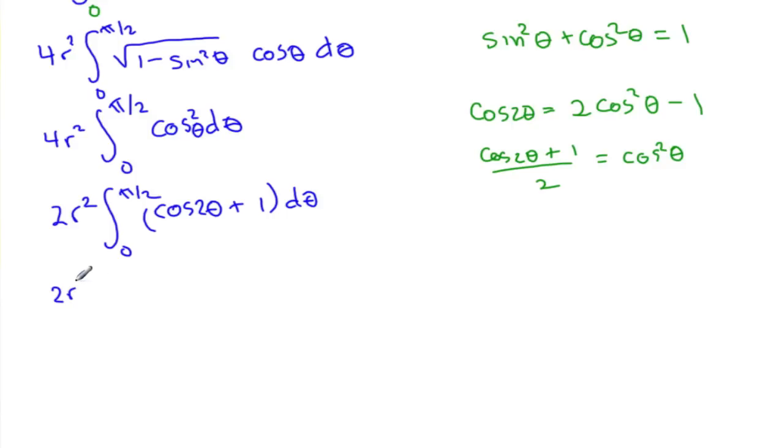Now, 2r squared, the integral of cosine 2 theta is 1 half sine 2 theta. Integral of 1 will just be theta, and this will be from 0 to pi over 2.